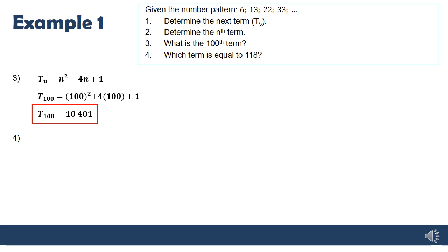Number four is a little bit more complicated because they say which term is equal to 118. Now you know from linear patterns that we would substitute in for Tn here. But because this is a quadratic equation, you have to remember, this is a quadratic equation because its highest exponent is 2. So remember that all quadratic equations must be set equal to 0 to be able to solve them.